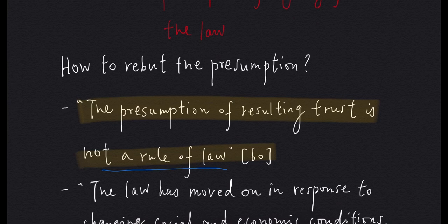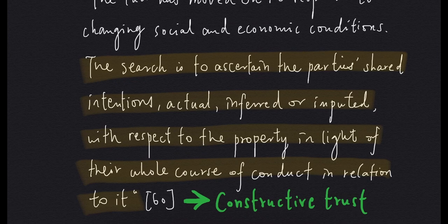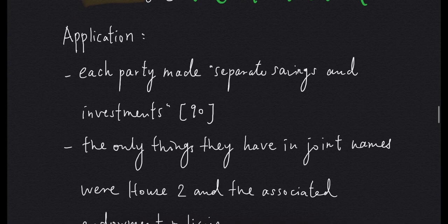According to Lady Hale, the presumption of resulting trust is not a rule of law. Instead, we have to rely on common intention constructive trust. In Lady Hale's words, the search is to ascertain the parties' shared intentions — actual, inferred, or imputed — with respect to the property in light of their whole course of conduct in relation to it. So in order to rebut the presumption of equity follows the law, we have to establish a common intention constructive trust and apply it to our case.